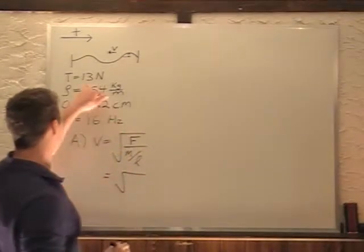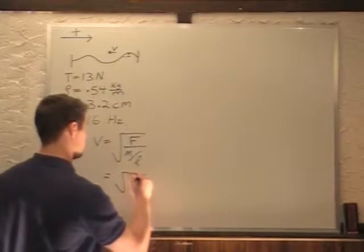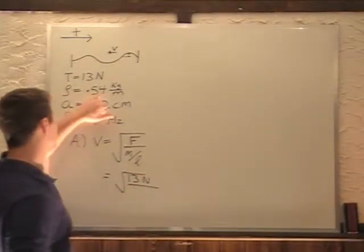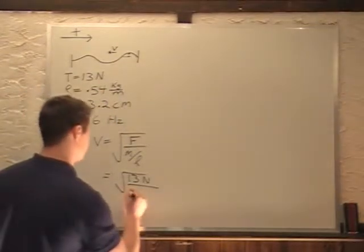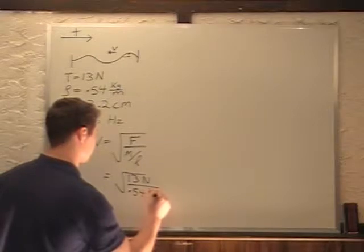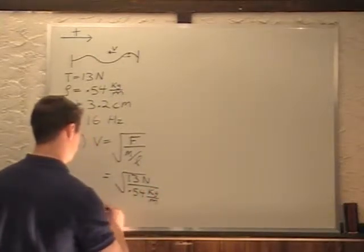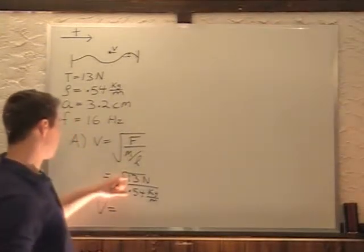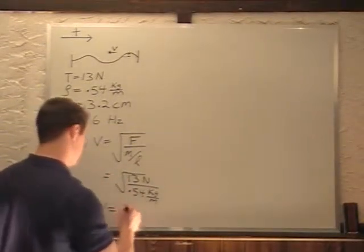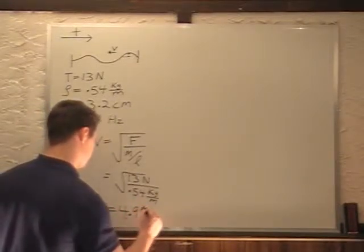So we'll put in our values for all these. So square root of F, F is tension, that's our force, 13 newtons. Divided by our mass per unit length of rho is 0.54 kilograms per meter. So that turns out to be 13 divided by 0.54 gives you 4.9 meters per second.